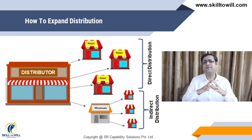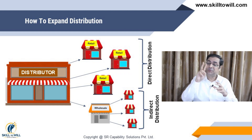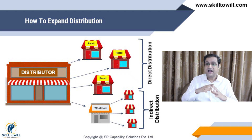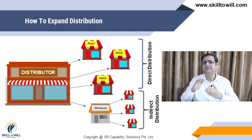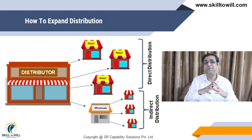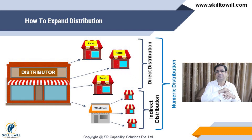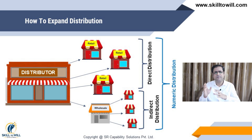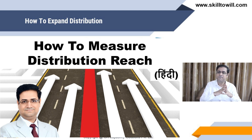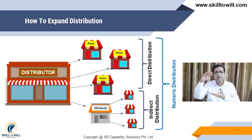If you have to increase coverage, then you have to increase two things: direct distribution and indirect distribution. If you increase both of these, then numeric distribution will increase. I have made a detailed video on this — you can check it out in the description box.